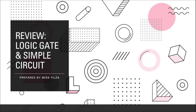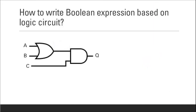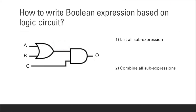Hello everyone, assalamualaikum. Today we are going to review sub-topic 1.4: Logic Gates and Simple Circuits. To write a Boolean expression from a logic circuit, there are two steps: first, list all sub-expressions, and then combine all sub-expressions.